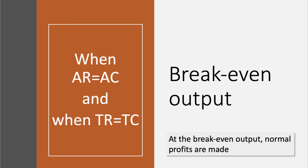The Break Even Output for a firm is where the Revenue per Unit equals the Cost per Unit, or where Total Revenue is equal to Total Cost. At the Break Even Output, normal profits are made.